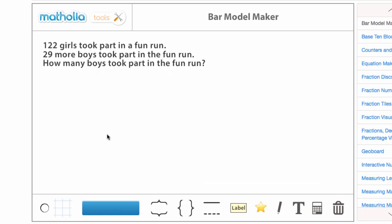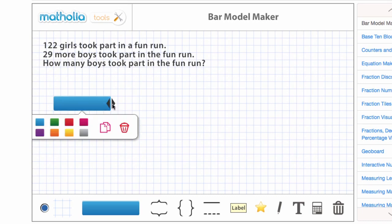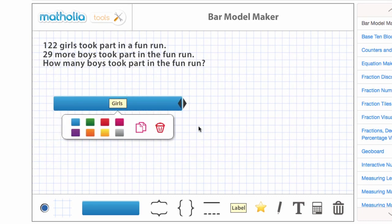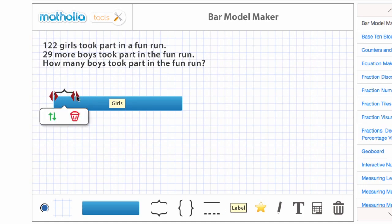In this example, there is one known part, the number of girls, and one unknown part, the number of boys. We can use a comparison model to represent the problem like this.